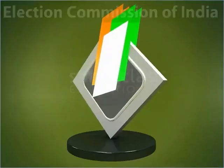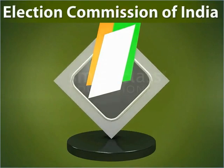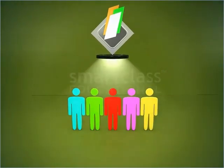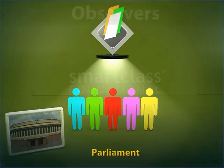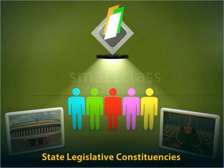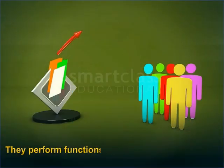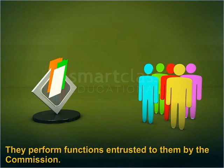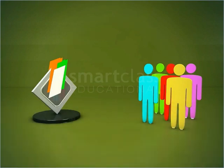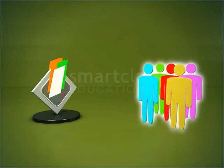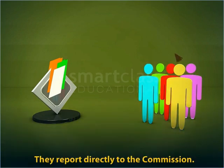The Election Commission of India also nominates officers of government as Observers for the Parliament and the State Legislative Constituencies. They perform functions entrusted to them by the Commission. The appointment of Observers is a statutory one, and they report directly to the Commission.